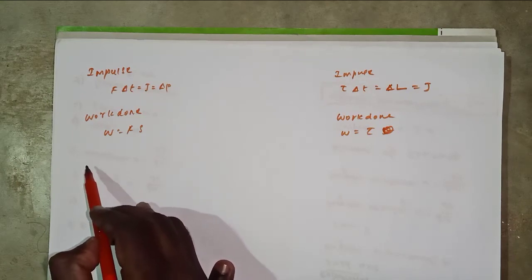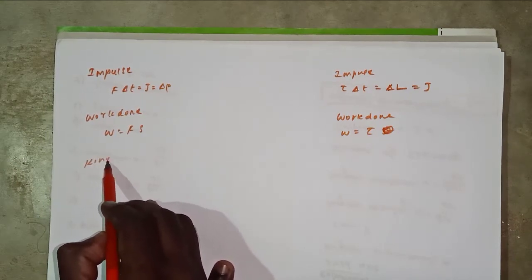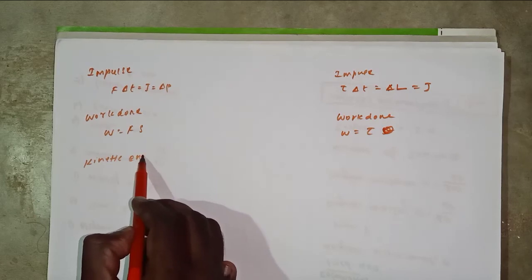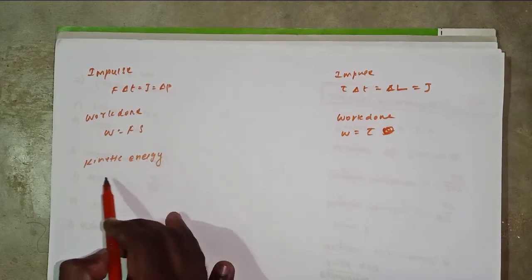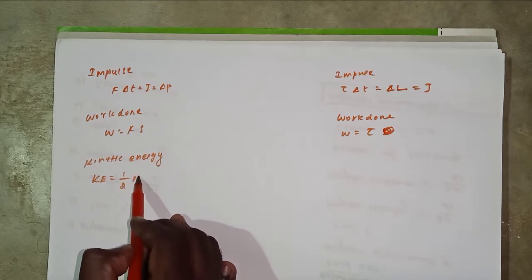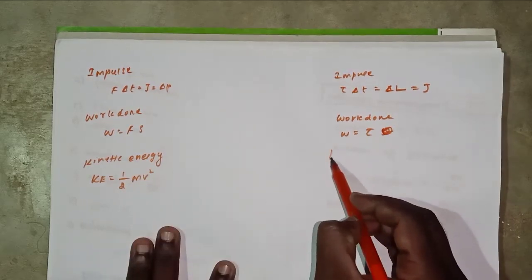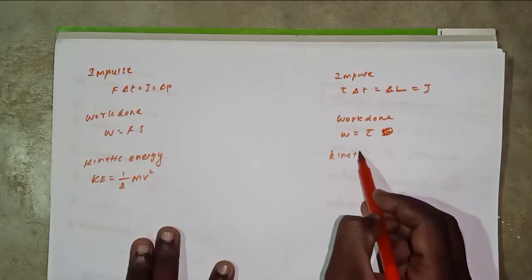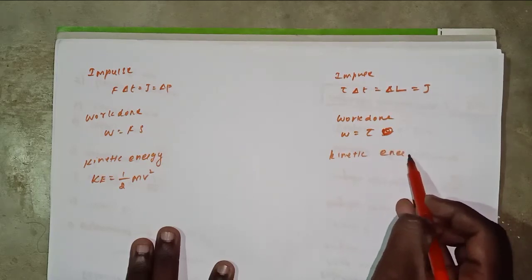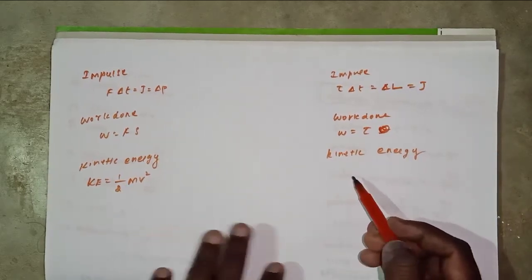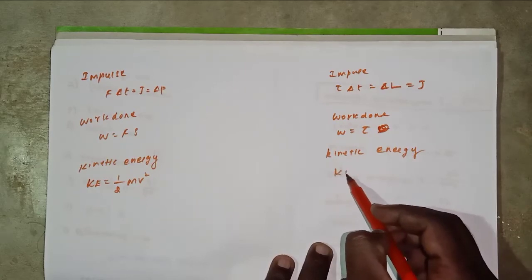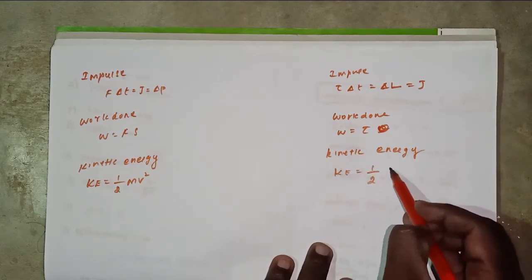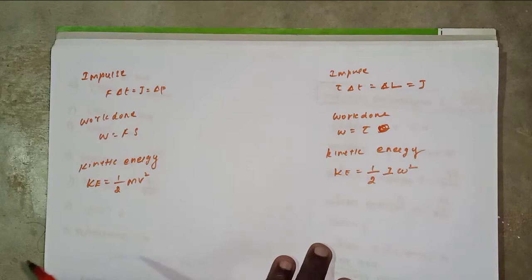Kinetic energy KE equal to 1 by 2 m v squared. Rotational: 1 by 2 I omega squared.